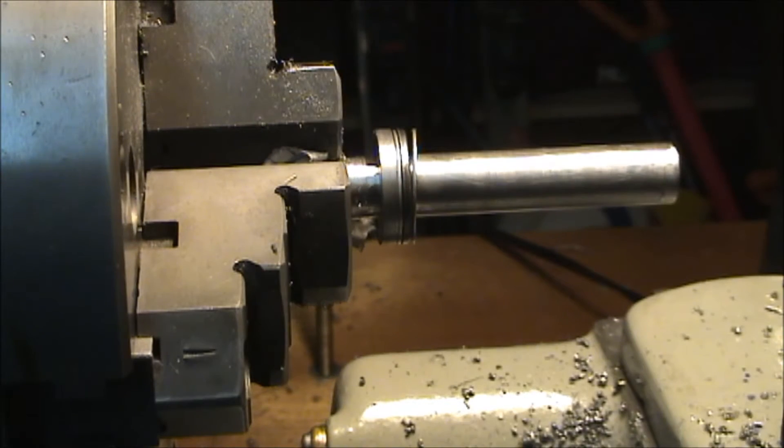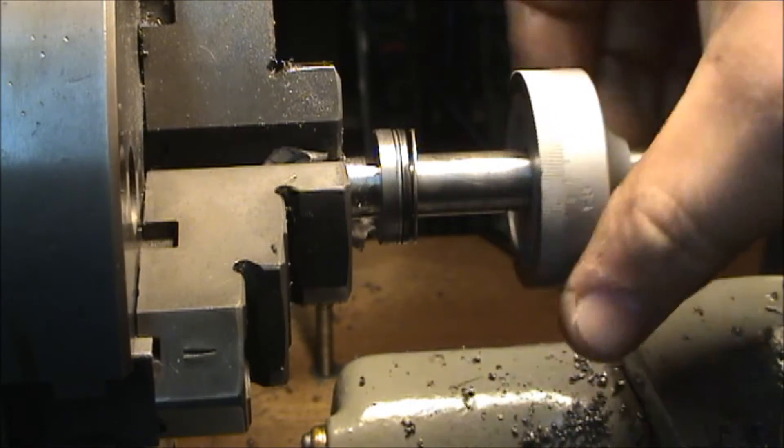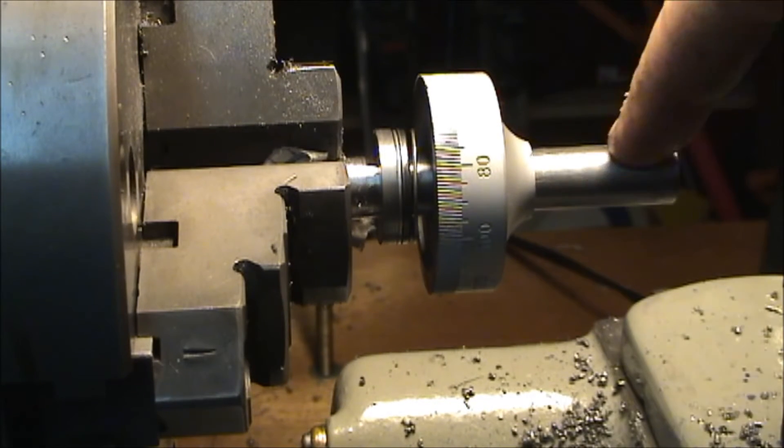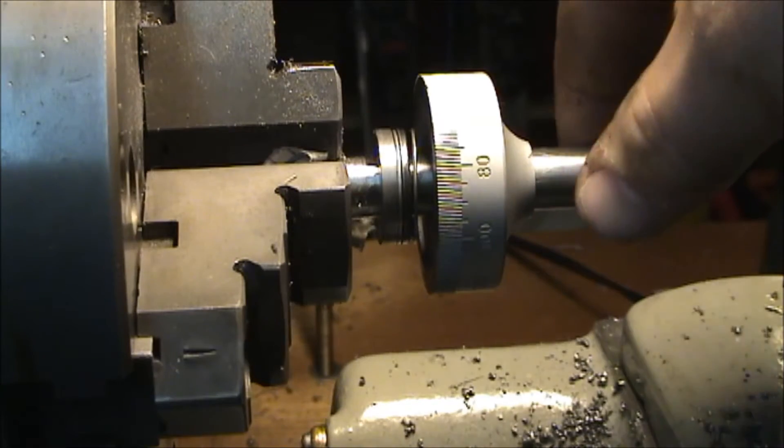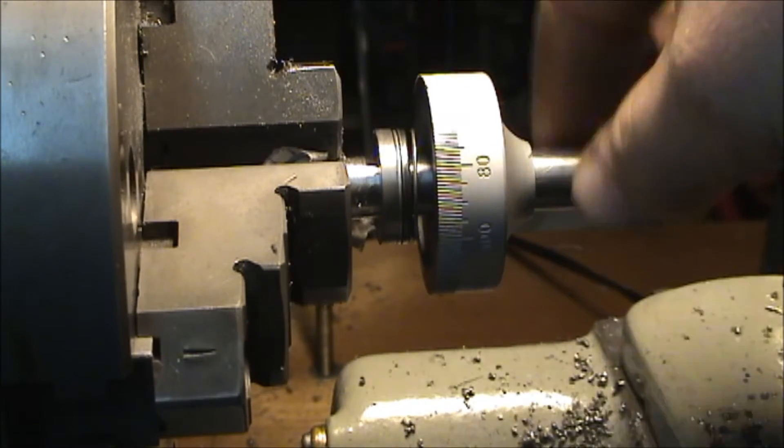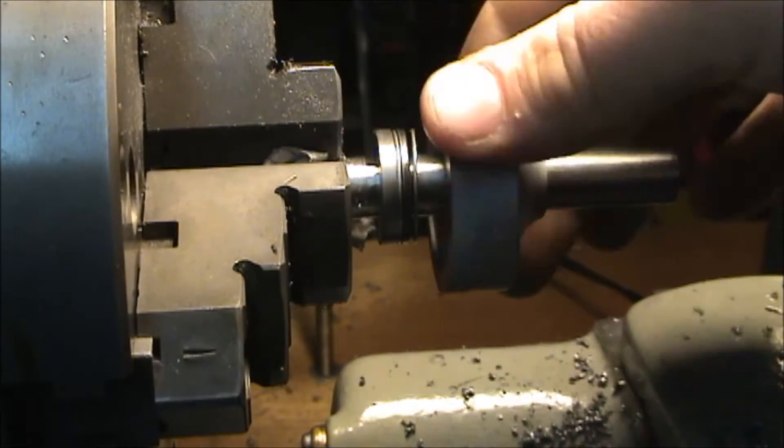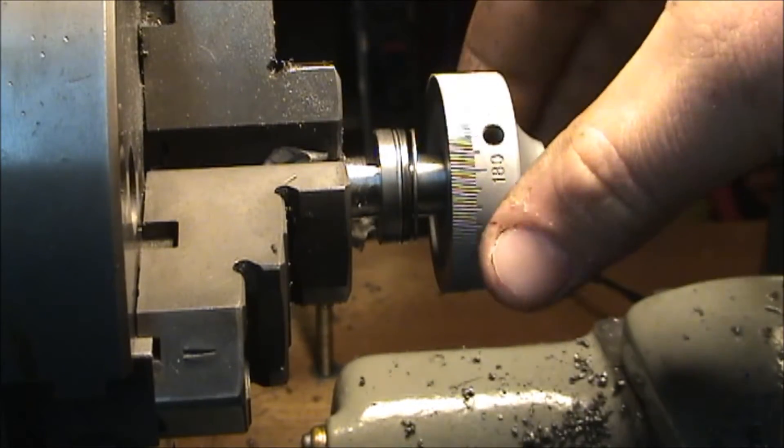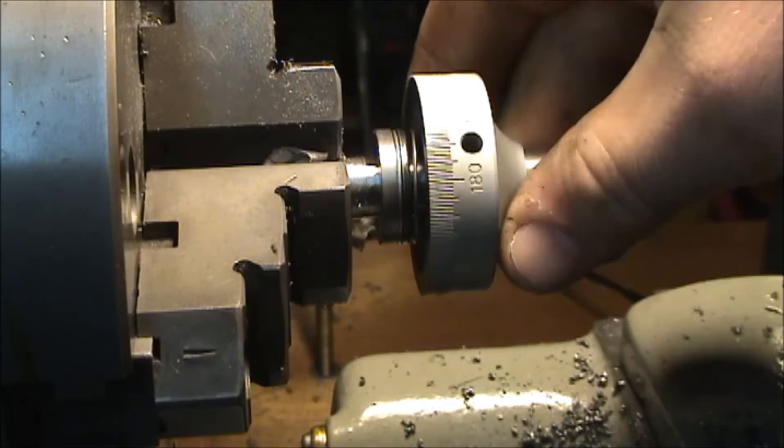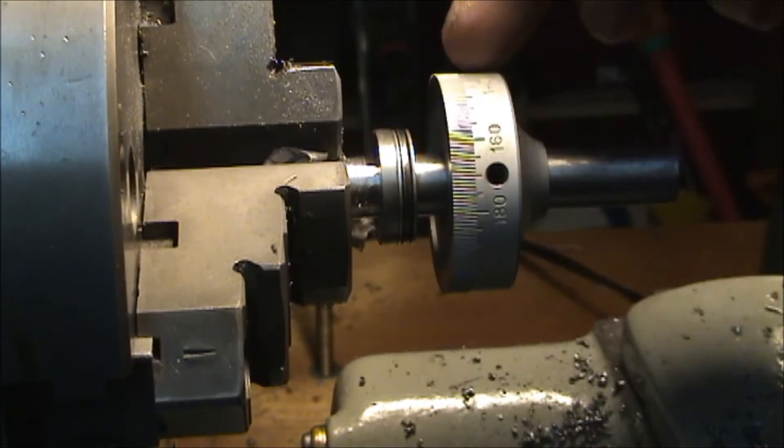Right here, and then on the other side of that plate is gonna be our collar. Now remember I said I was about a half a thousandth over on this. I polished that half thousandth off with some sandpaper to get a nice sliding fit on this so I can spin it around and you're gonna be able to set it. This set screw will hold it in place.